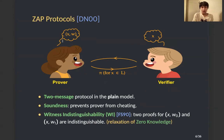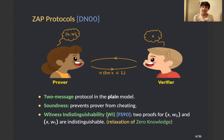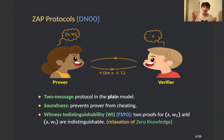ZAP protocols are two-message protocols in the plain model which have a similar soundness property and a property that is a relaxation of the zero-knowledge property, called witness indistinguishability, or WI for short. Witness indistinguishability says that if there exist two witnesses W0 and W1 for the same statement X, the verifier cannot distinguish between two proofs where in one the prover uses W0 and in the other the prover uses W1.